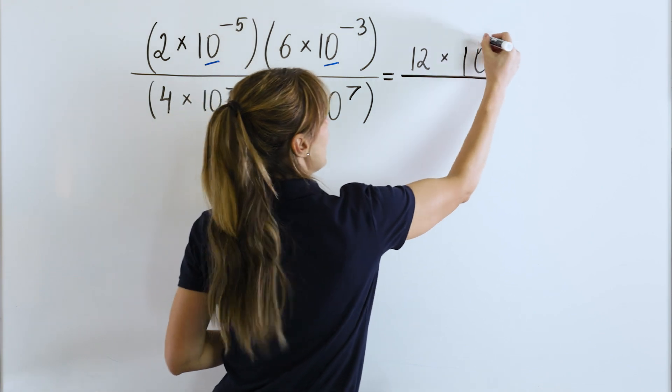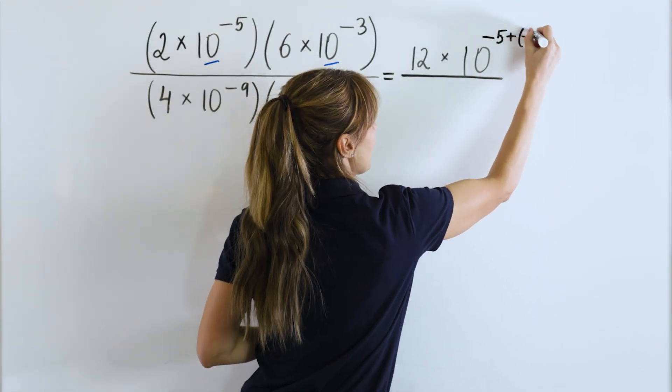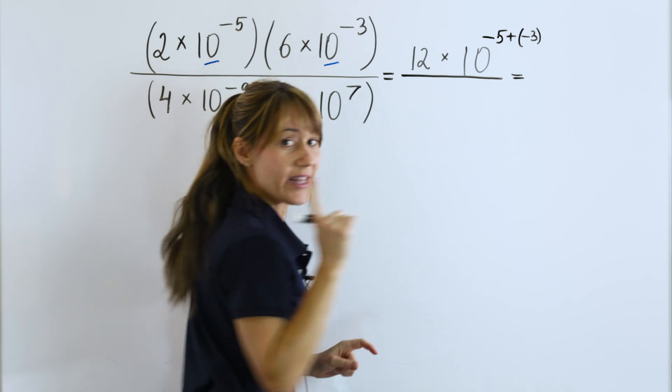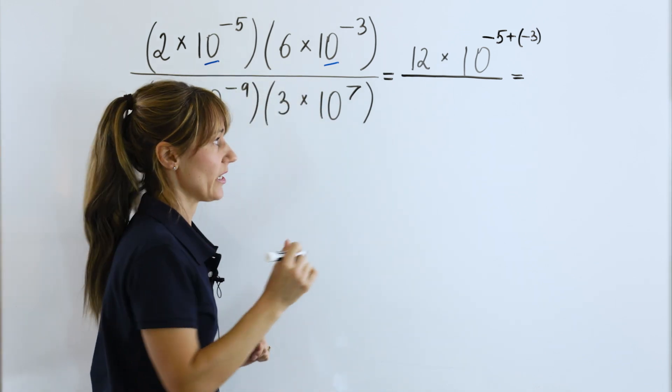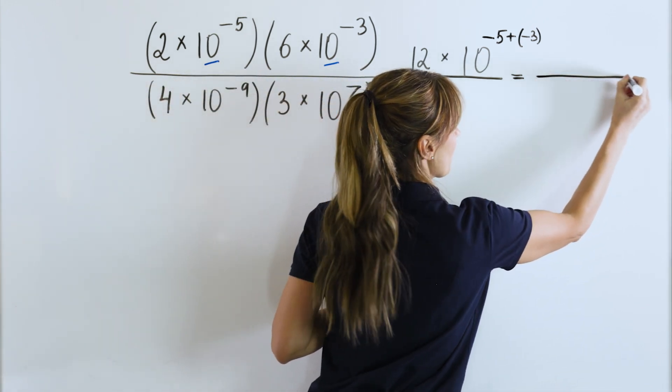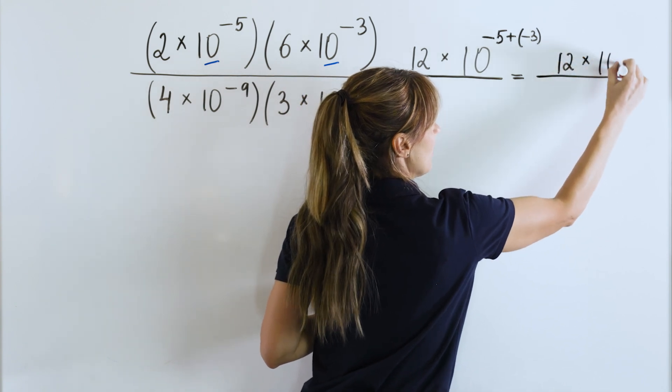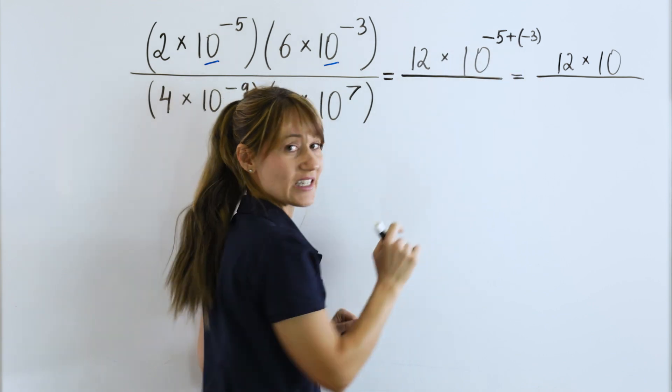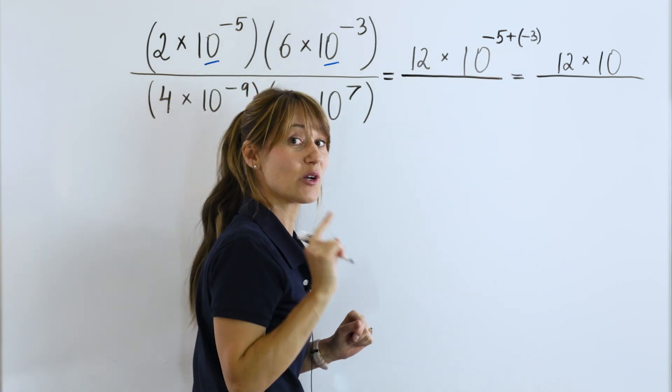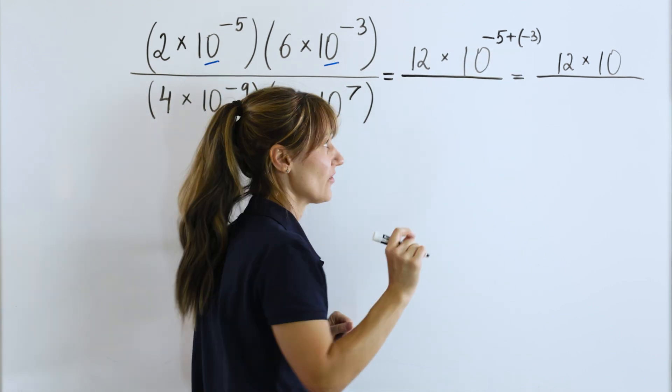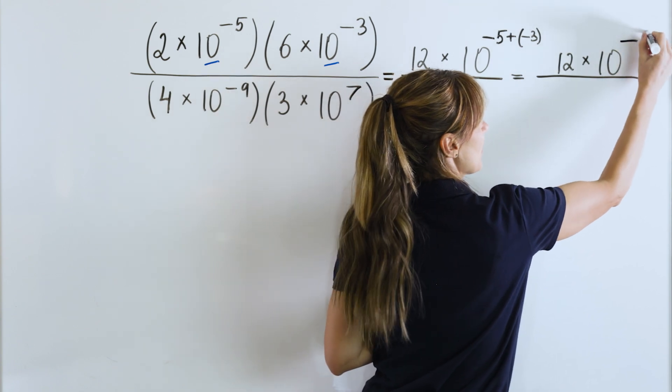We will have negative 5 plus negative 3. So, let's keep simplifying the numerator. What do we have? We have 12 times 10 to what power? Negative 5 plus negative 3 is negative 8 because we are adding 2 negative numbers. So, 10 to the power of negative 8.